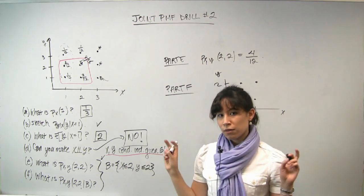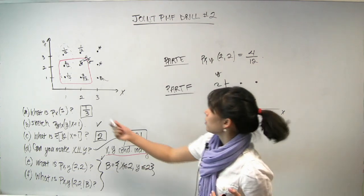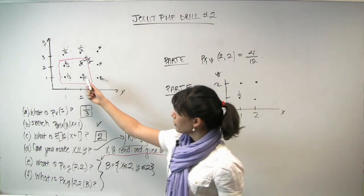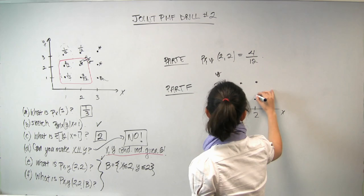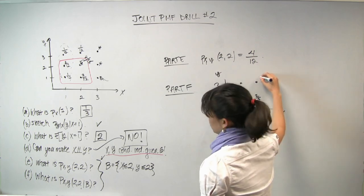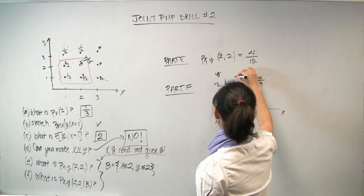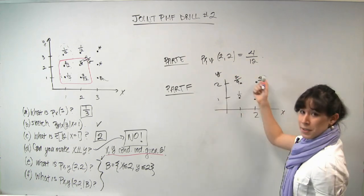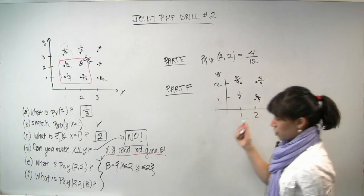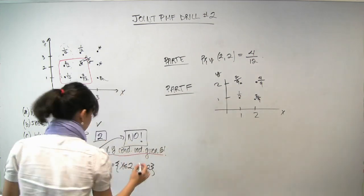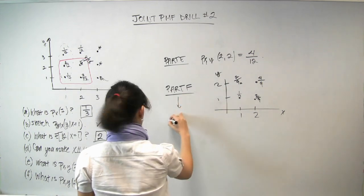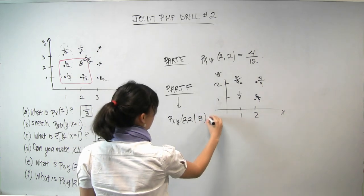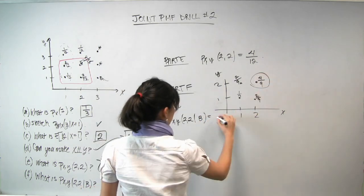So my algorithm from before was to add up all the numerators. So 1 plus 2 plus 4 plus 2 gives you 9. And then to preserve the relative frequency, you keep the same numerator. So here we had a numerator of 1. That becomes 1 ninth. Here we had a numerator of 2. This becomes 2 ninths. Here we had a numerator of 4. That becomes 4 ninths. Here we had a numerator of 2. So 2 ninths. And indeed, the relative frequencies are preserved and they all sum to 1. So our answer for part f, let's box it here, is that pxy 2,2 conditioned on b is equal to 4 ninths. It's just that guy. So we're done.